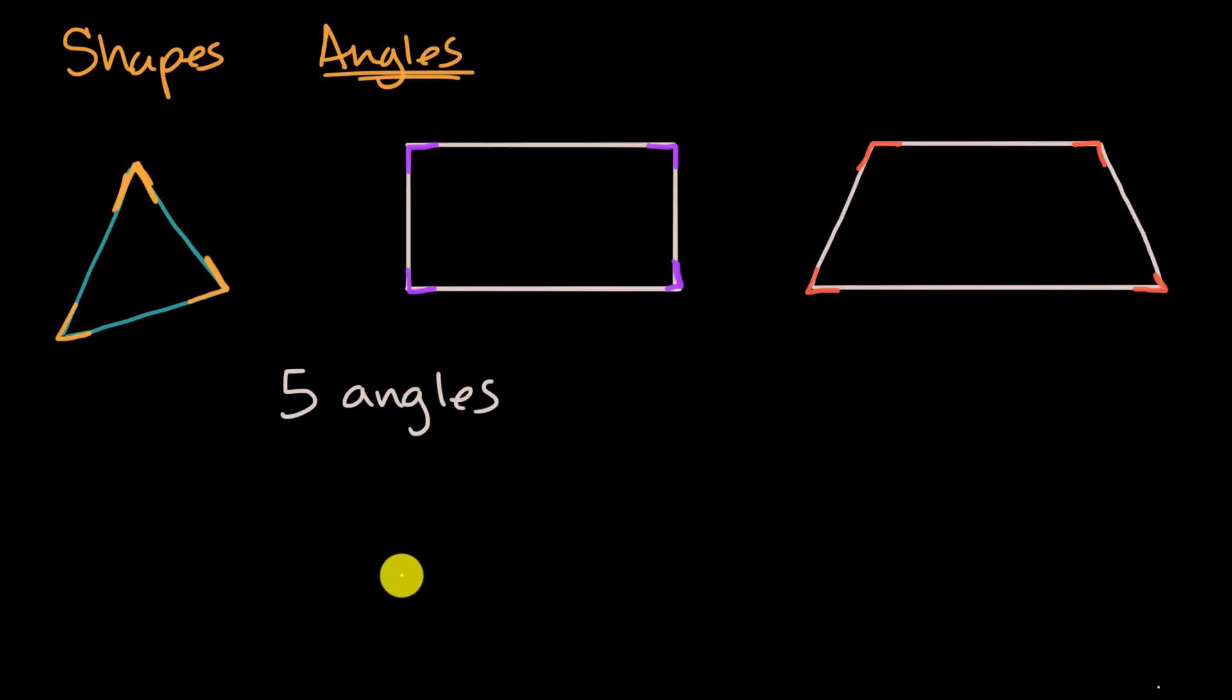All right, now let's try to do this together. And let me do this in a fun color. Well, actually, I'll do it in purple. So that is one angle right over there. Then I have two angles. Then I have three angles. And now I have four angles. And if I meet there, I get five angles. And we could see the angles here.